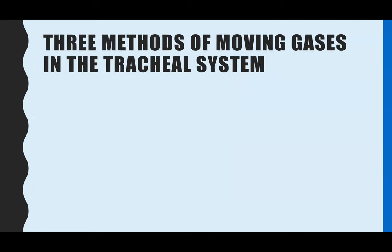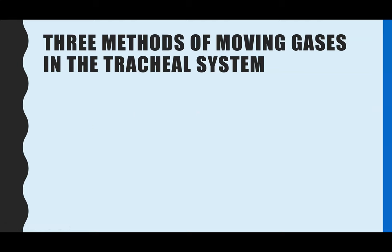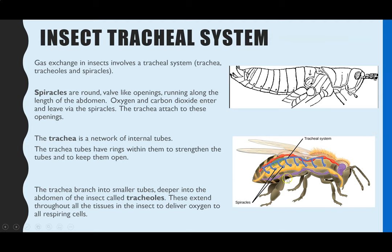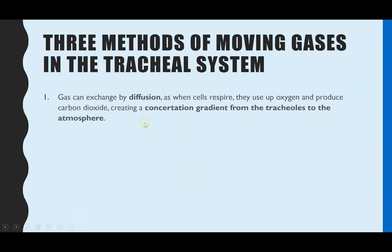The final part looks at how gases move in and around the tracheal system. The first of three methods is simple diffusion. When the cells respire within the insect's body, they use up oxygen and produce carbon dioxide, creating a concentration gradient between the gases inside the insect compared to the outside atmosphere. Because the insects are so small, the distance between the tracheals and the outside is minuscule, meaning simple diffusion can occur.